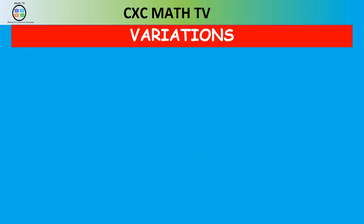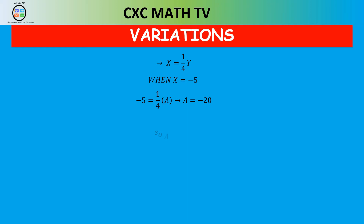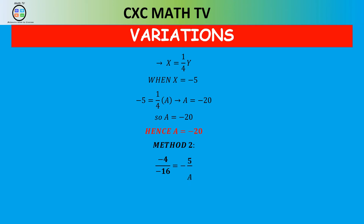So the direct variation equation is x equals one quarter of y. Looking back at the table, when x is negative 5, the y value is a. So negative 5 equals one quarter times a; transposing gives a equals negative 20. With method two, using x₁ over y₁ equals x₂ over y₂, you still get a equals negative 20. Method one — finding the variation constant — is the safest approach.